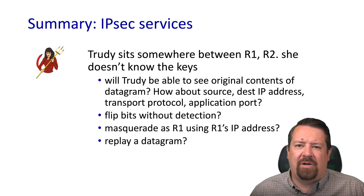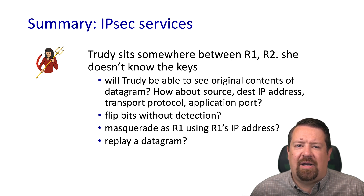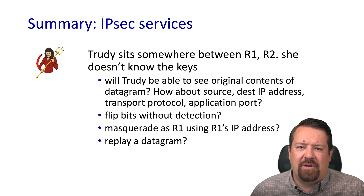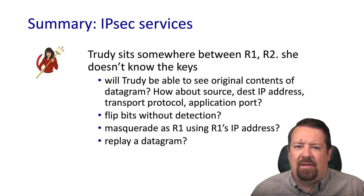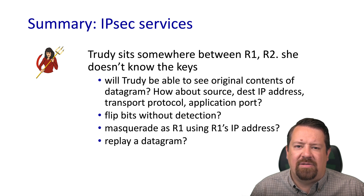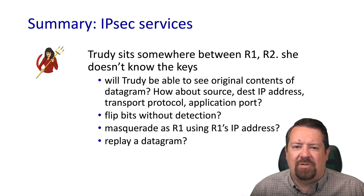Assuming an attacker sitting between R1 and R2 does not know the symmetric keys that have been shared in advance, she will not be able to see the original contents of the datagram. In encapsulation mode, she will not see the original IP source, destination, ports, etc. — she will see an IP header in the clear, but it contains only the IP addresses of the two routers forming the tunnel, not the end-to-end information of the hosts sending the encrypted content. She will not be able to flip bits without detection because of the data integrity check, and she cannot masquerade as either R1 or R2 without the secret keys. The association is also protected against replay by the use of sequence numbers — the sequence number is in the clear, but it's covered by the keyed integrity check, so she cannot change the sequence number and regenerate a valid integrity check.